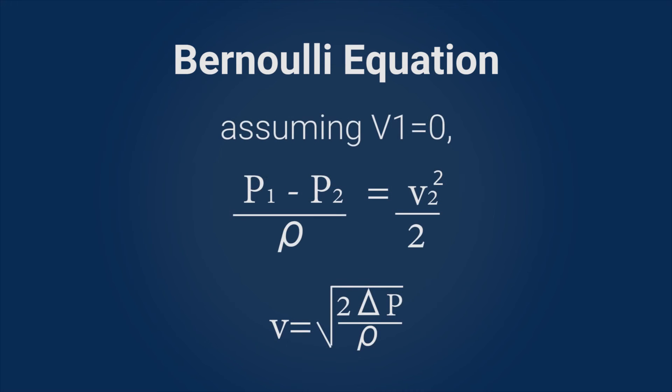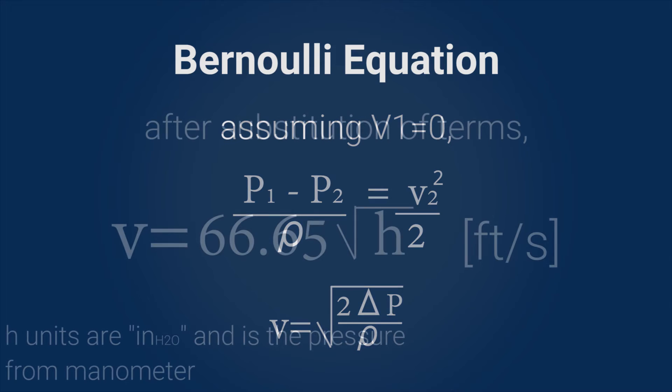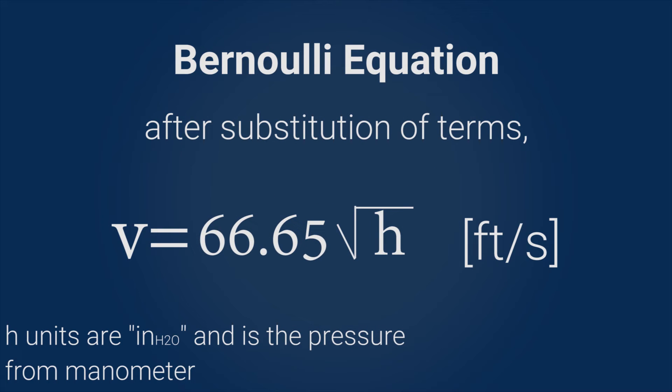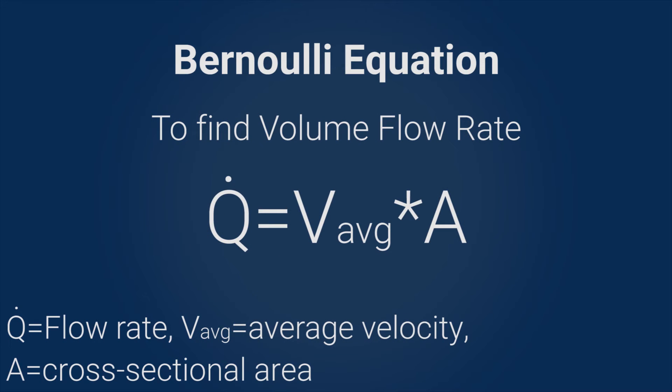After some arranging and substitution of terms, we arrive at the following equation: velocity is equal to 66.65 times the square root of the pressure reading in inches of water, which gives us units of feet per second. Once we have the velocity, the volumetric flow rate can be calculated by multiplying the average velocity times the cross-sectional area of the duct.